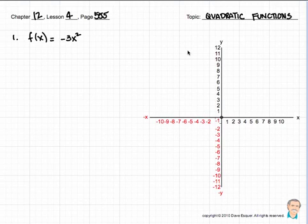Good morning. Chapter 12, Lesson 4 is page 555, and we're going to be using quadratic functions. Let's start off with number 1. We're going to be talking about parabolas. We have vertexes and axes of symmetry, and we have functions that look like ax squared plus bx plus c.